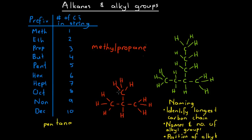Moving to the next molecule, we first identify the longest carbon chain — don't be distracted by how it's drawn. It's easy to think we have four carbons with a side chain, but the longest chain is actually six carbons. So we're dealing with hexane.